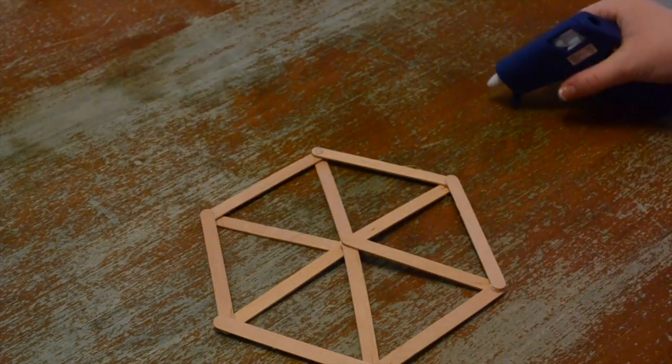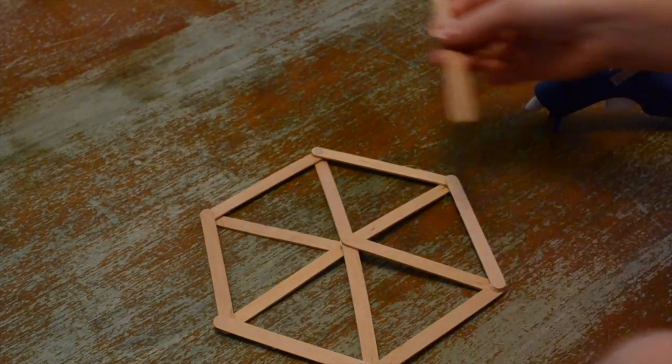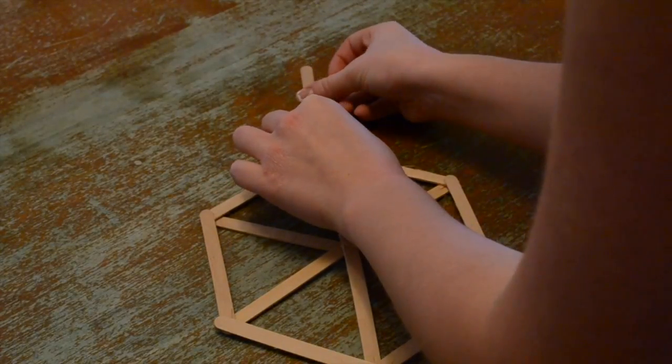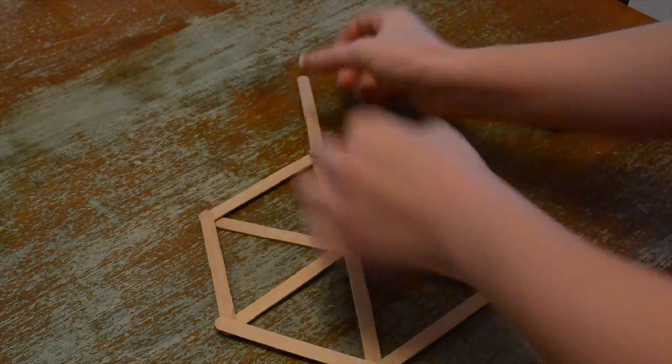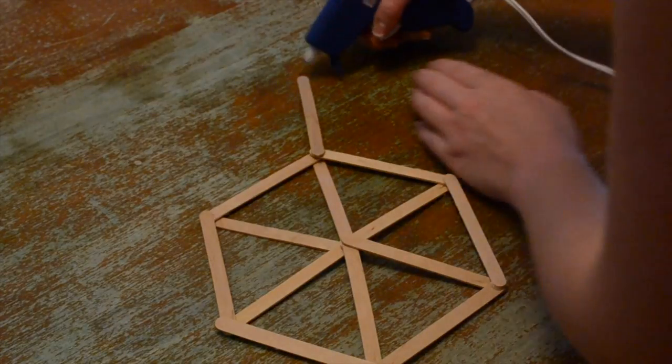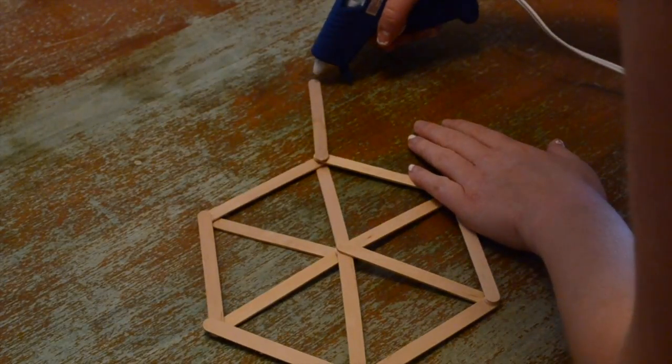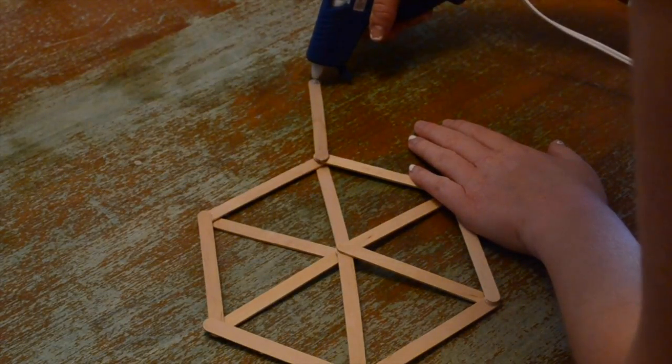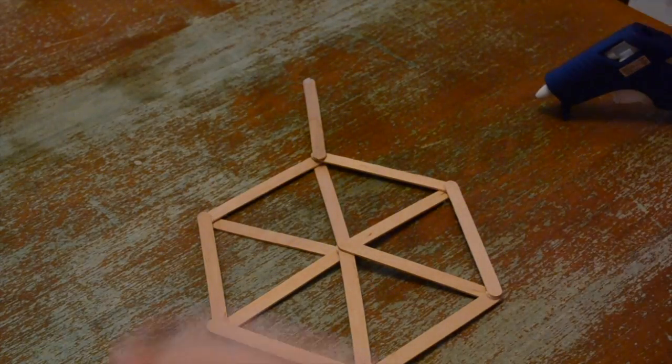Once the base of your snowflake is done, you will start to expand it to give it more of that snowflake look. So place a popsicle stick at the corner of the base and then place two more popsicle sticks at the end of that popsicle stick. And continue this until each corner is done.